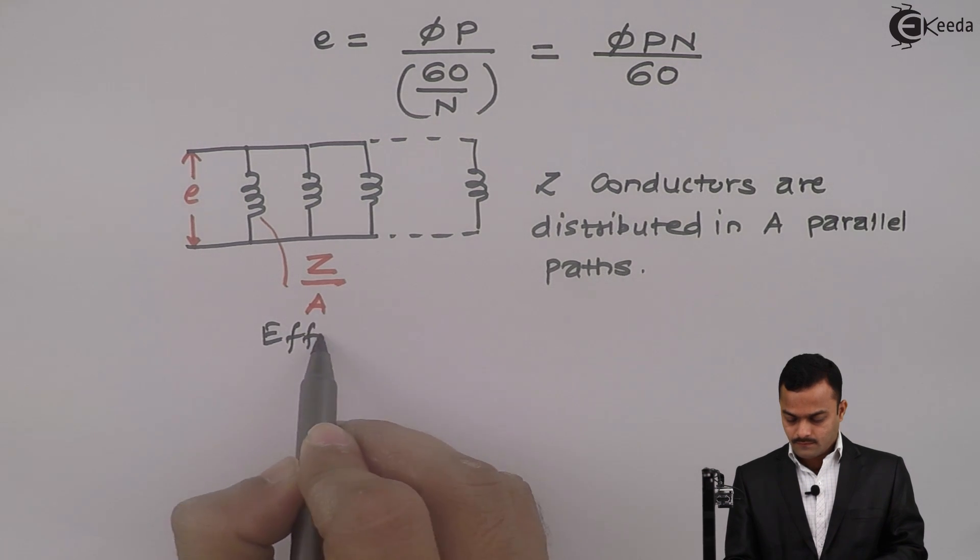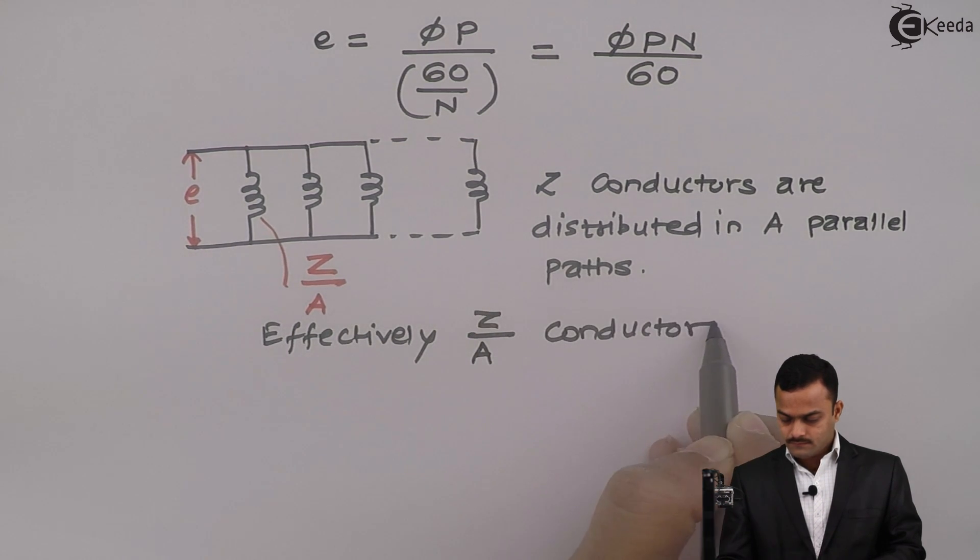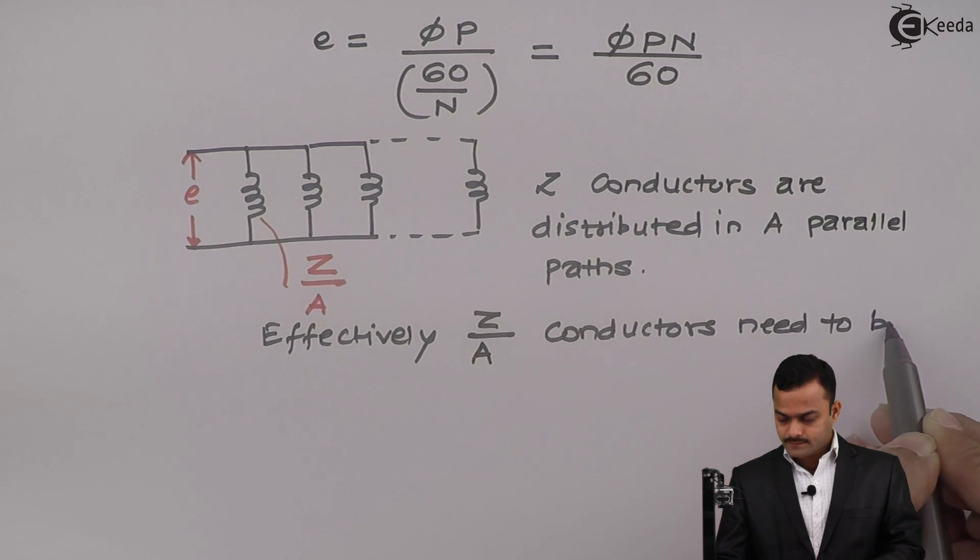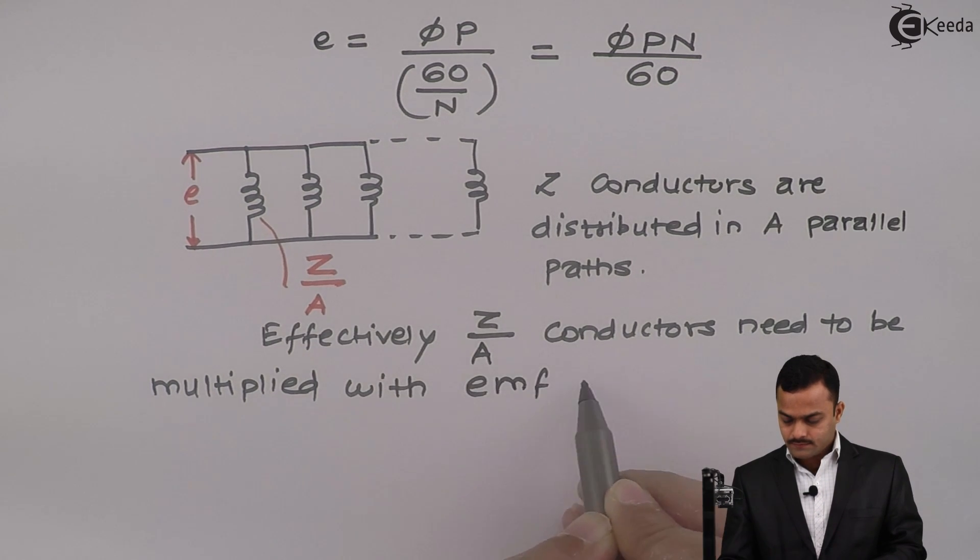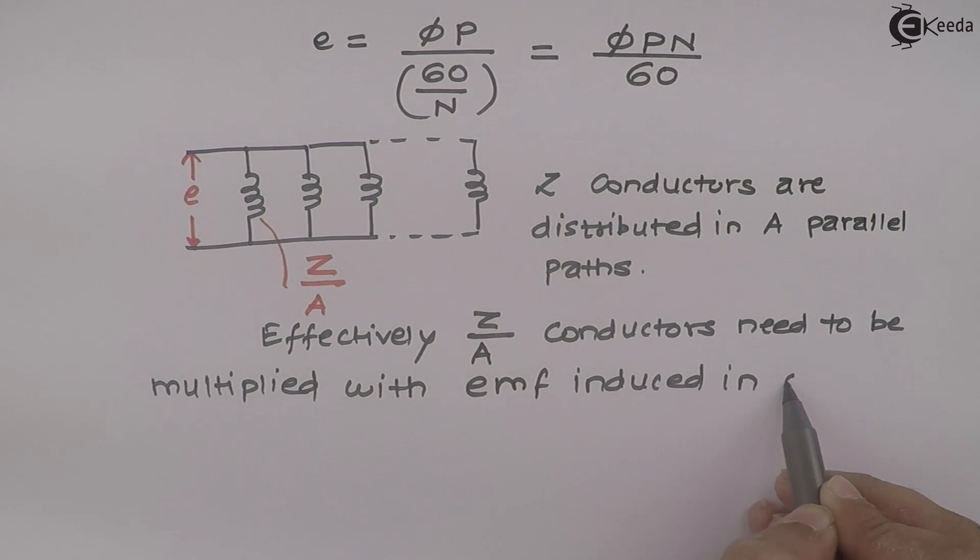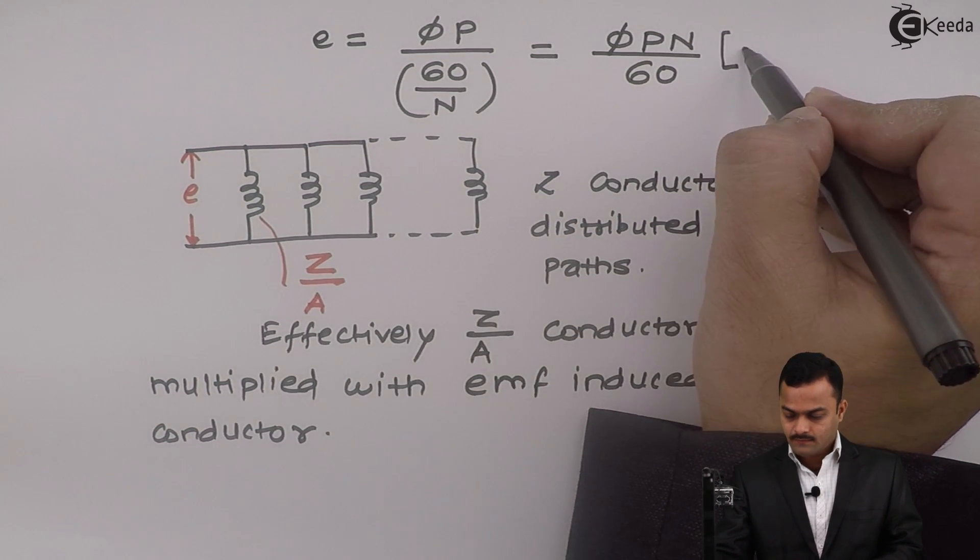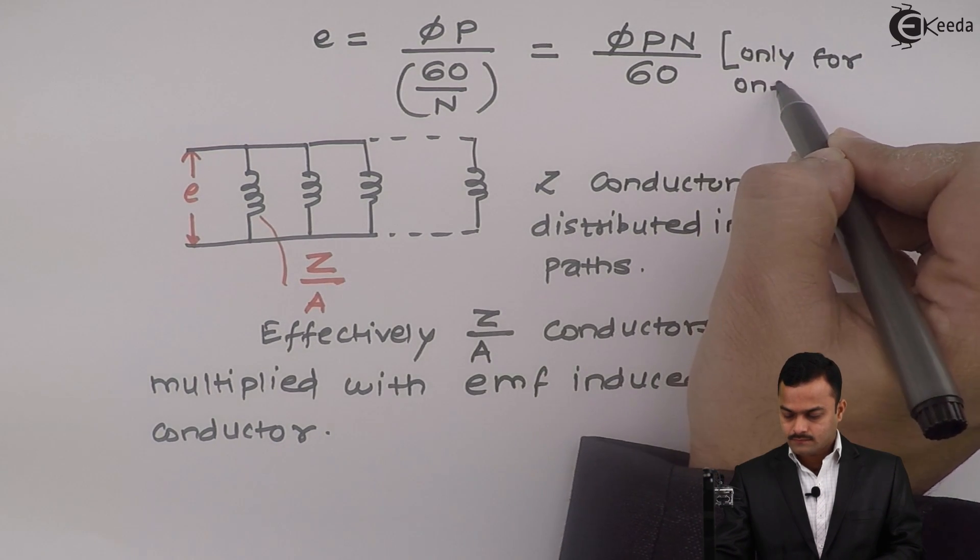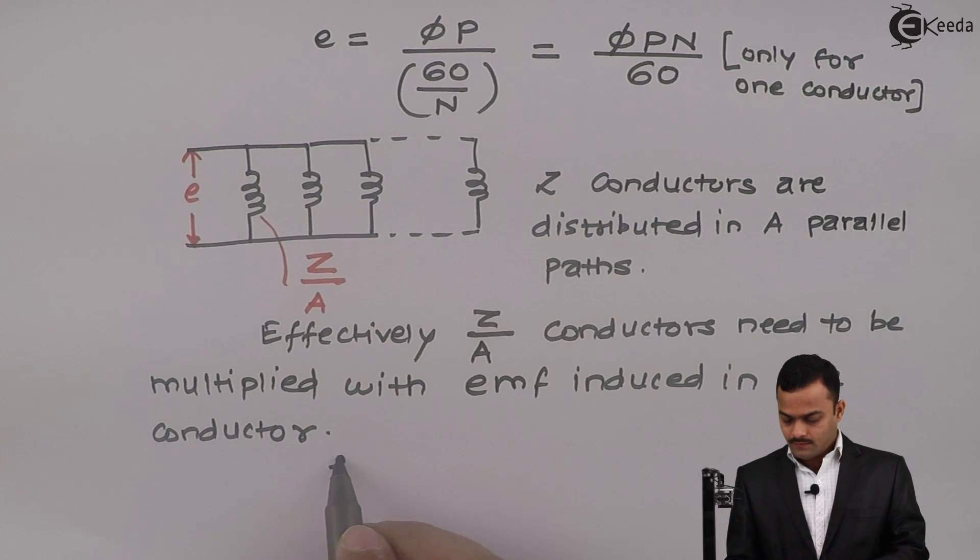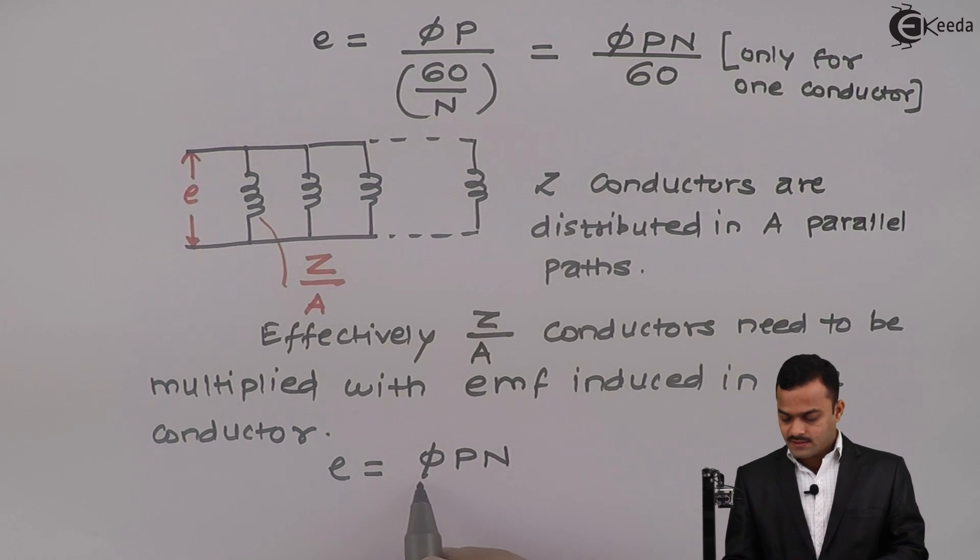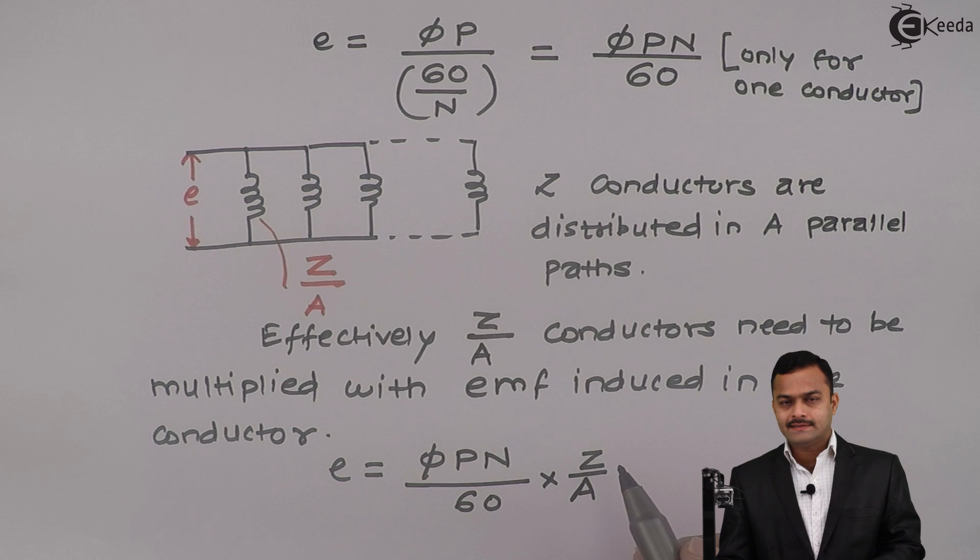So, effectively, Z by A conductors, Z conductors need to be multiplied with EMF induced in one conductor. So, EMF induced in one conductor is this. So, this is only for one conductor. If I multiply this EMF E which is given as ΦPN by 60 with Z by A I will get total EMF induced in a DC generator.